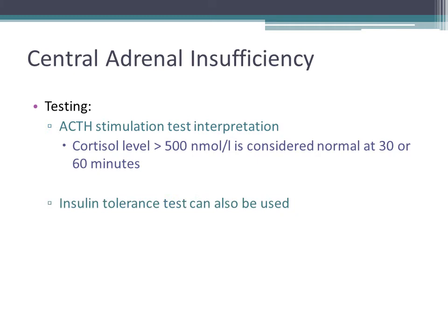Another stimulation test, which is actually the gold standard, is the insulin tolerance test. We inject insulin, induce hypoglycemia, and as a result, people mount counter-regulatory hormones including growth hormone, cortisol, and epinephrine. However, it is a somewhat risky and cumbersome test requiring hospital admission with an expert nurse and physician present, because you are inducing hypoglycemia to below 40 mg/dL. The ACTH stimulation test is a better and more reliable alternative.